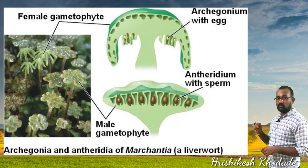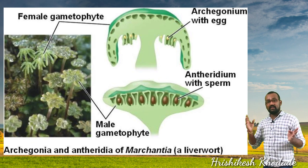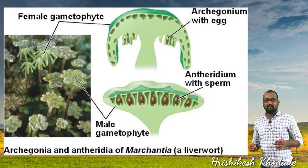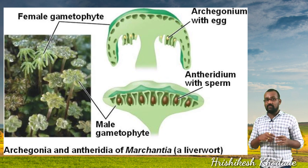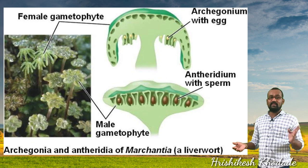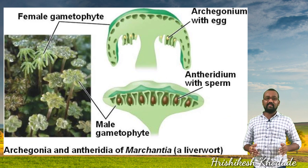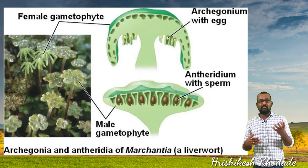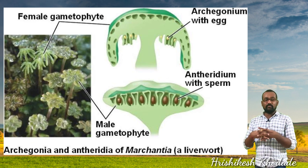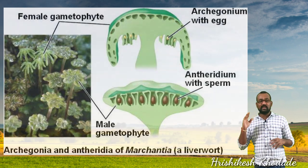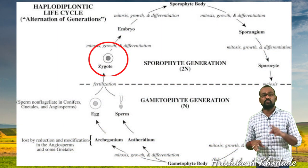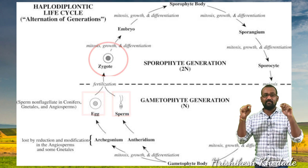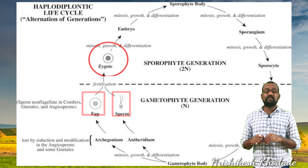Please note: anthridium and archegonium are present on the same thallus. The archegonium produces female gametes and the anthridium produces male gametes. Anthridium releases motile male gametes, while the archegonium contains a stationary female gamete. Union of these gametes results in the formation of a zygote. The zygote is unicellular, and the gametes are also unicellular — two unicellular gametes come together to form the unicellular zygote.